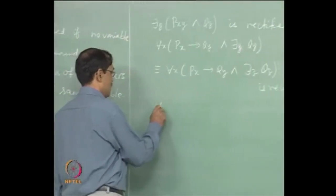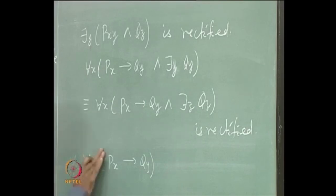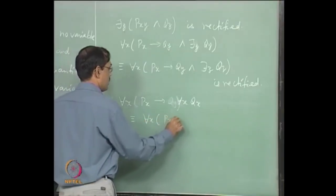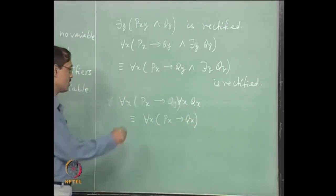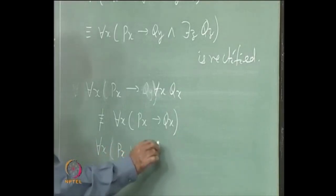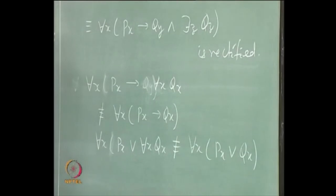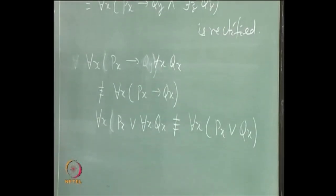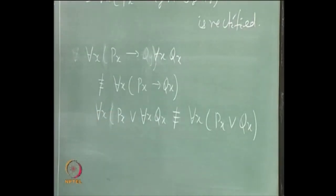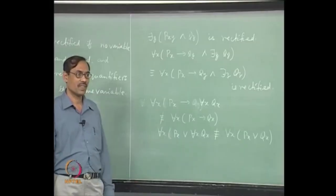For example, for each x, p(x) implies q(y), and for each x, q(x) — this is not equivalent to for each x, p(x) implies q(x). Similarly, for each x, p(x) or for each x, q(x) is not equivalent to for each x, p(x) or q(x). For or it will not hold, and if you have an existential quantifier, duality prevails. For implies, both things will happen because the quantifier will change type once you use distribution. But once the formula is rectified, the situation can be different.